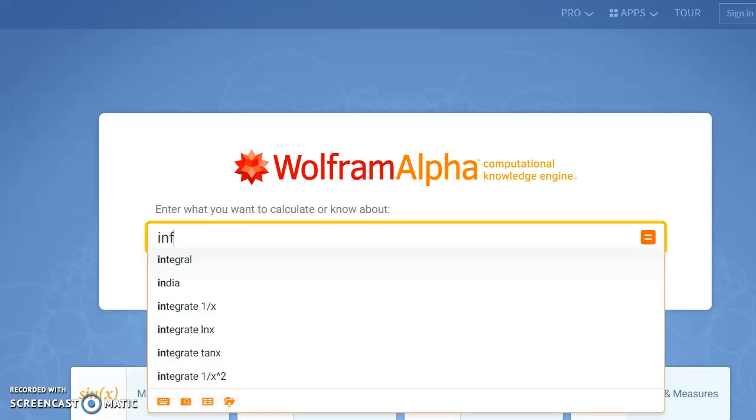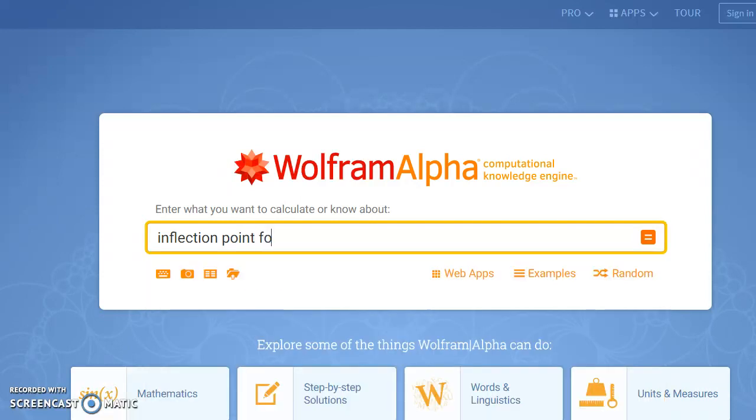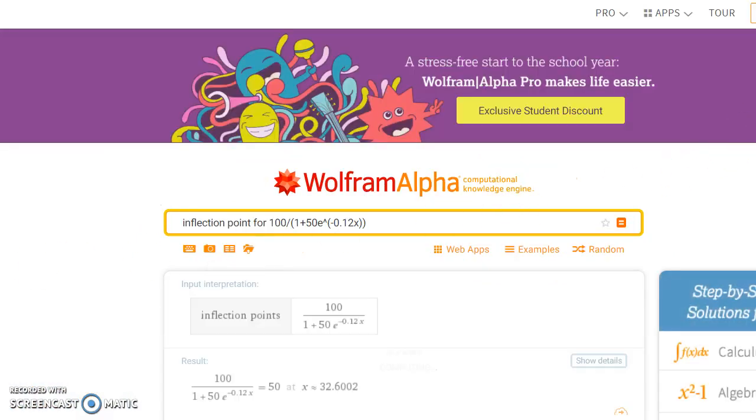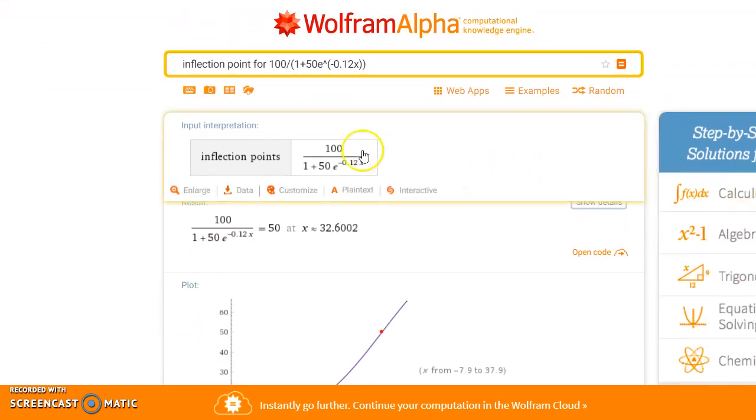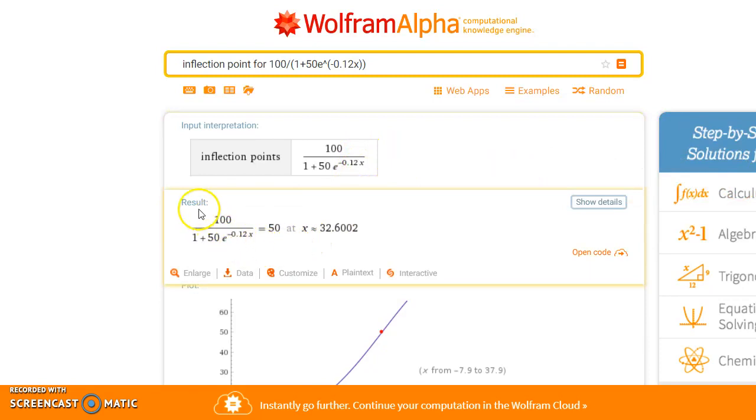So in order to do that, we can switch to Wolfram Alpha and ask for an inflection point for 100 divided by this longer expression, all in parentheses. Since this is a more complicated function, it's always a good idea to just double check that input. But what we see is we get an inflection point at x equals 32.6, or about 33, and that our function evaluated at that point would be 50. So we have an x value of about 33 and a function value of 50 at that point.